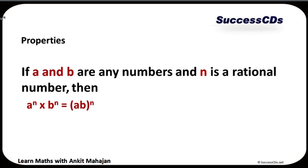Next we come to the same power identity. If A and B are any numbers and n is a rational number, then A raised to the power n into B raised to the power n comes out to be AB whole raised to the power n. Here the bases are different but the power is the same, so I can write it like AB raised to the power n. For example, 2 raised to the power 4 into 3 raised to the power 4 — bases are different, so I multiply the bases and keep the power the same: I write it like 2 into 3, raised to the power 4.